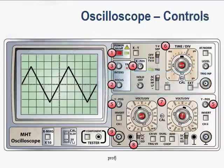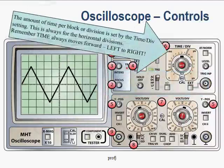One key control on the oscilloscope is the time per division setting. This sets the amount of time for each horizontal block. Remember, time always moves from left to right — it always moves forward.